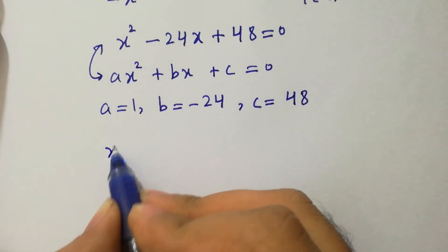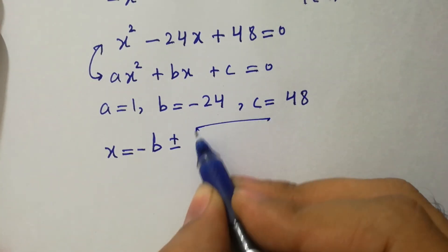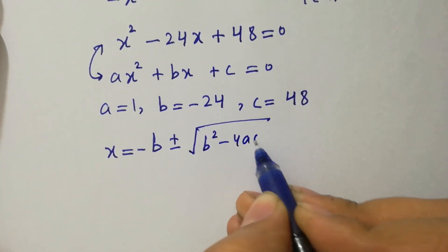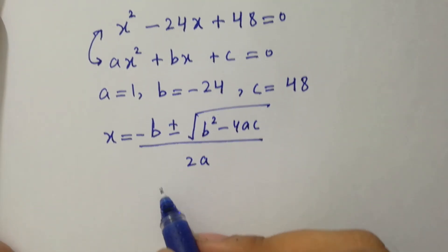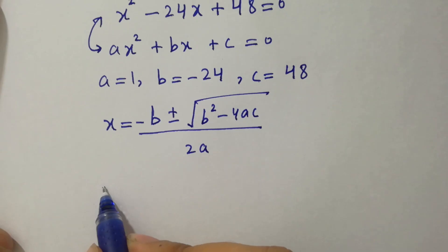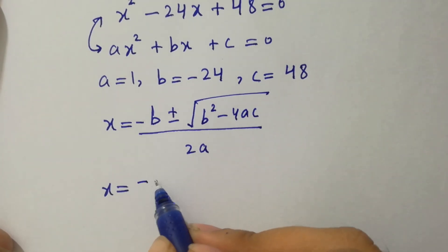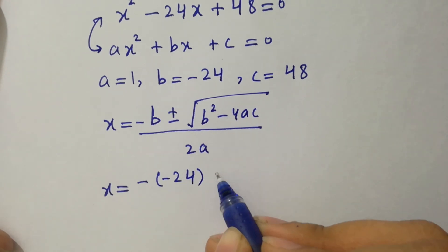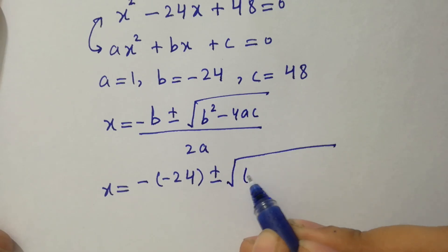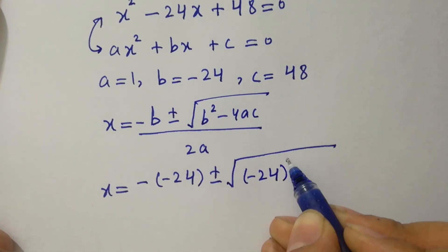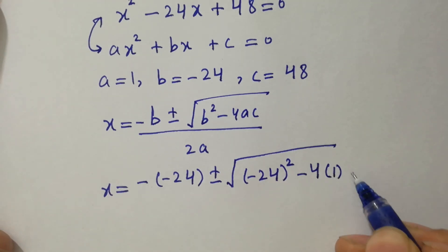x equal to minus b plus or minus square root of b squared minus 4ac, all over 2a. Putting in the values of a, b, and c: x equal to minus(minus 24) plus or minus square root of (minus 24) squared minus 4 times 1 times 48, all over 2 times 1.